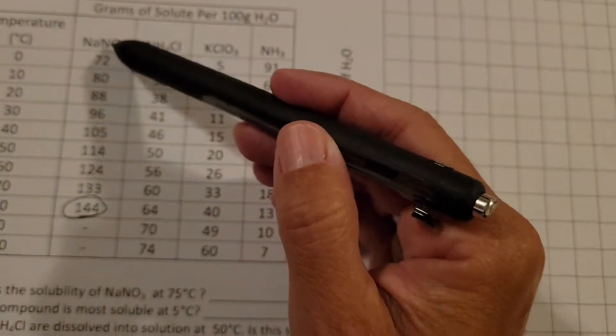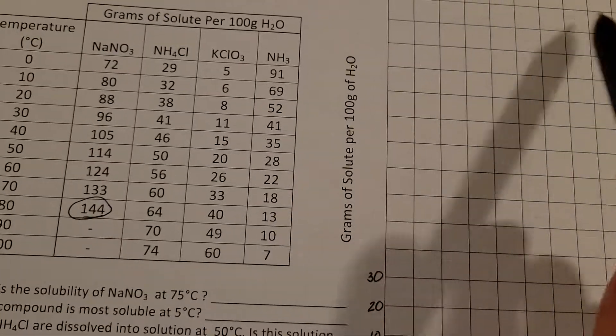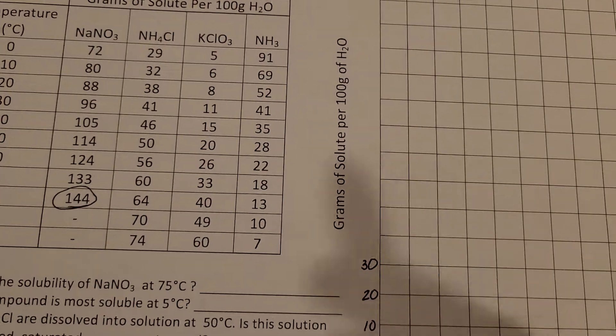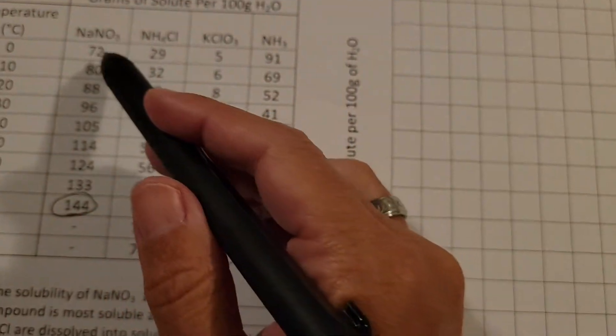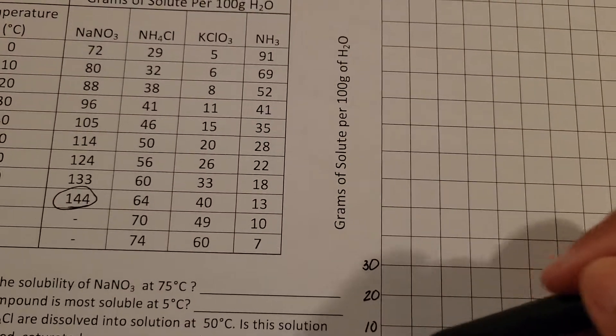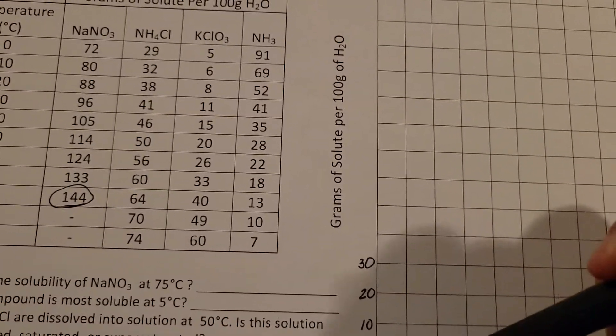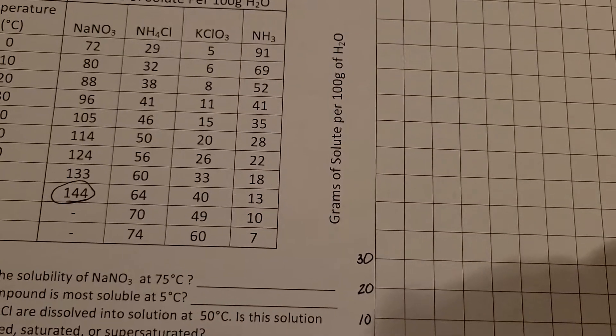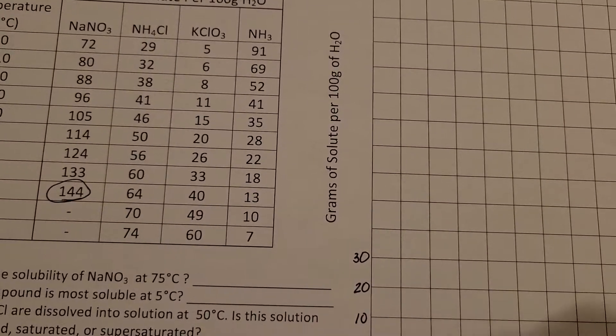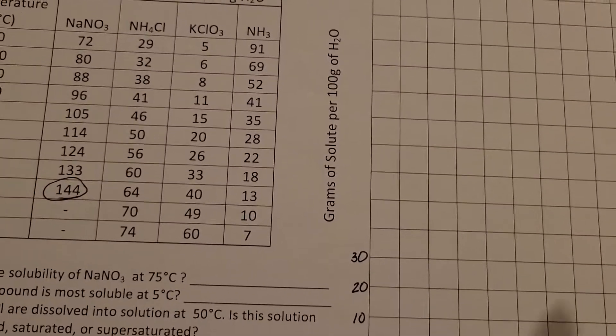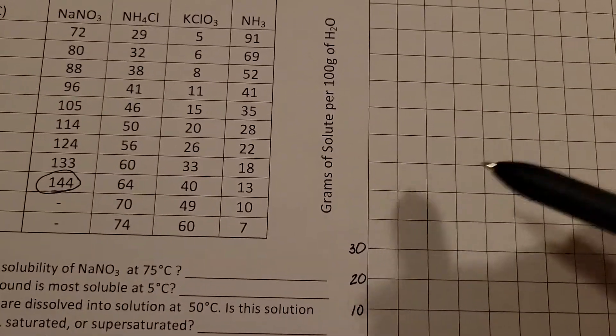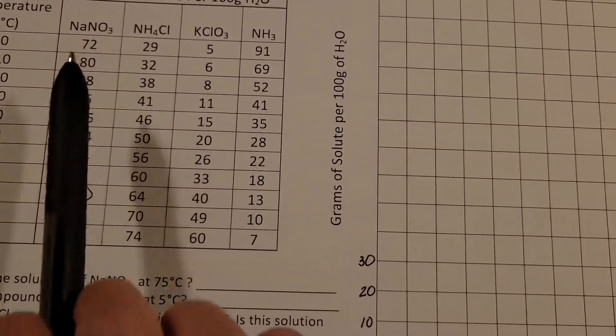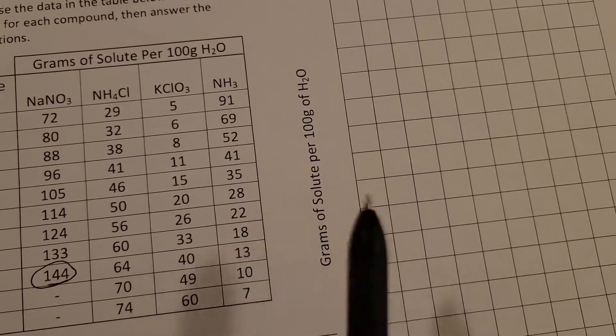Then you're just going to go ahead and plot the points. So you would go all the way down NaNO3. Let's say for that one I'm going to use blue. I'm going to go zero degrees 72, 10 degrees 80, 20 degrees, and I'm going to go ahead and plot those points and make the curves.